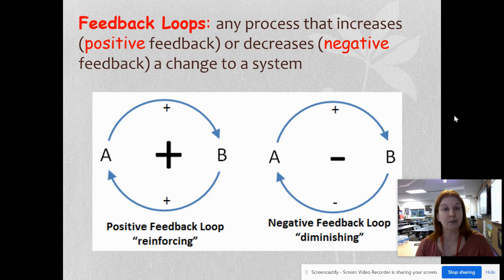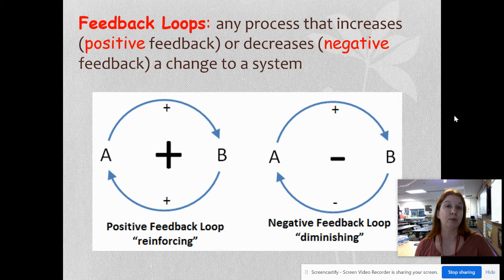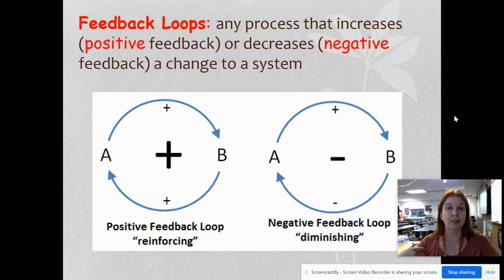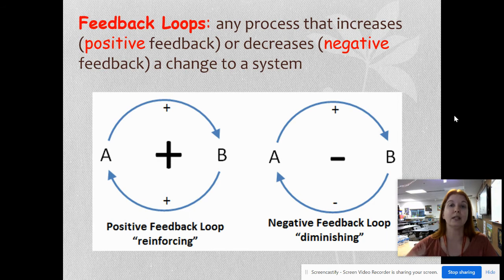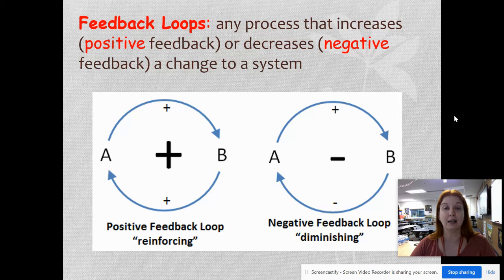Another example of a positive feedback loop: I get my paycheck, I don't spend all my money, so I build interest — that puts more money into my account, which allows me to build more interest, which gives me more money, which allows me to build more interest. A negative feedback loop example: I get my paycheck and all my bills automatically deduct, so I have no money left but my bills are paid. Next payday I get my deposit, my account goes up, then all my bills get paid — an increase that comes back down.